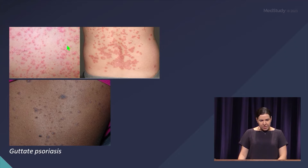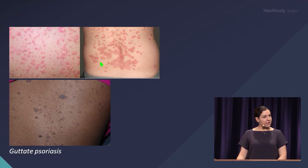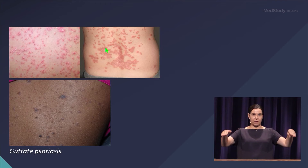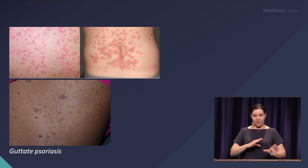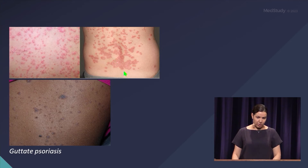Here you can appreciate that it's a similar distribution, but the lesions are much more red — a deeper shade of pink with some red in there — and they're a little bit thicker than the pityriasis rosea lesions. They're also not as perfectly distributed in a Christmas tree pattern; they're more haphazard, and in some areas you can see coalescing of the plaques, which you would never see in pityriasis rosea.